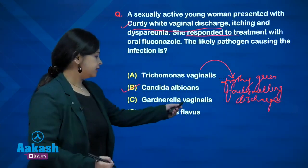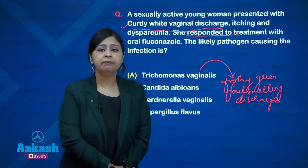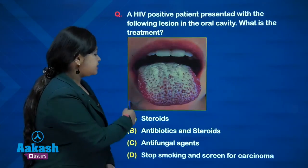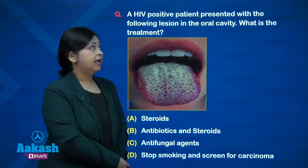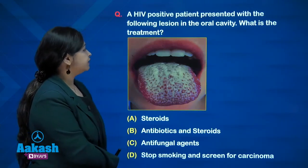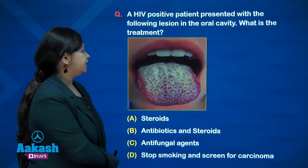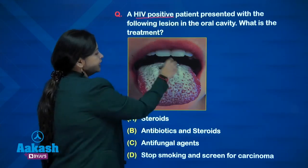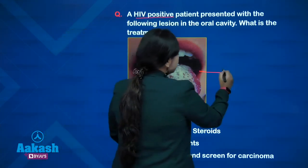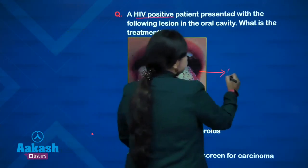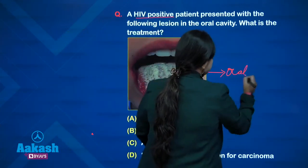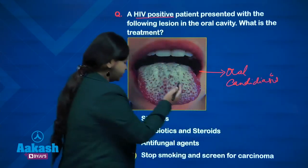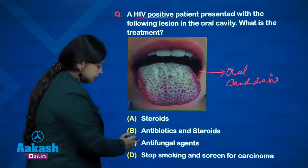Gardnerella vaginalis is responsible for causing bacterial vaginosis, which will be discussed under separate topics. The next question, which has been asked in AIIMS, is: an HIV positive patient presented with the following lesion in the oral cavity — what is the treatment? Here you have an HIV positive patient with a clinical image showing the curdy white patch on the tongue, indicating oral candidiasis. The treatment here would be antifungal agents.